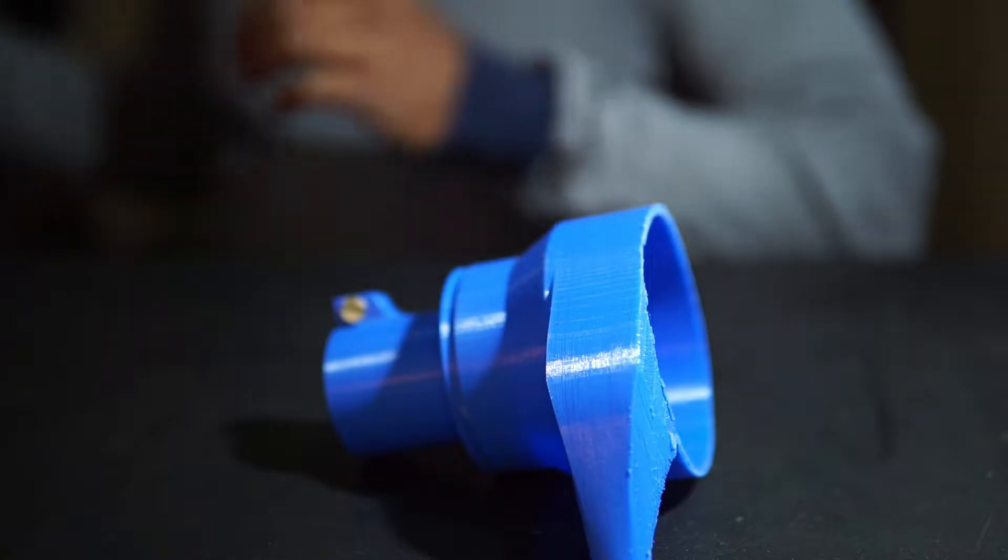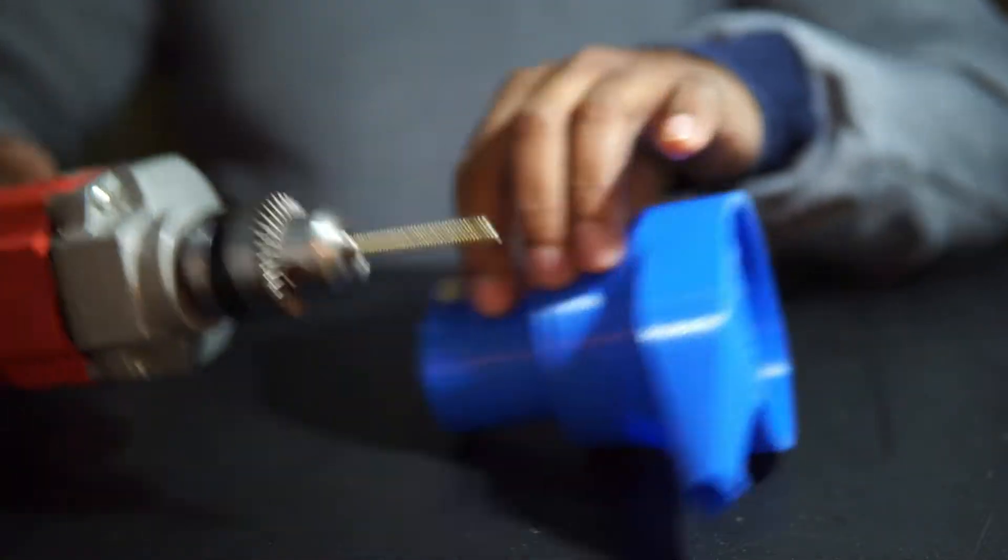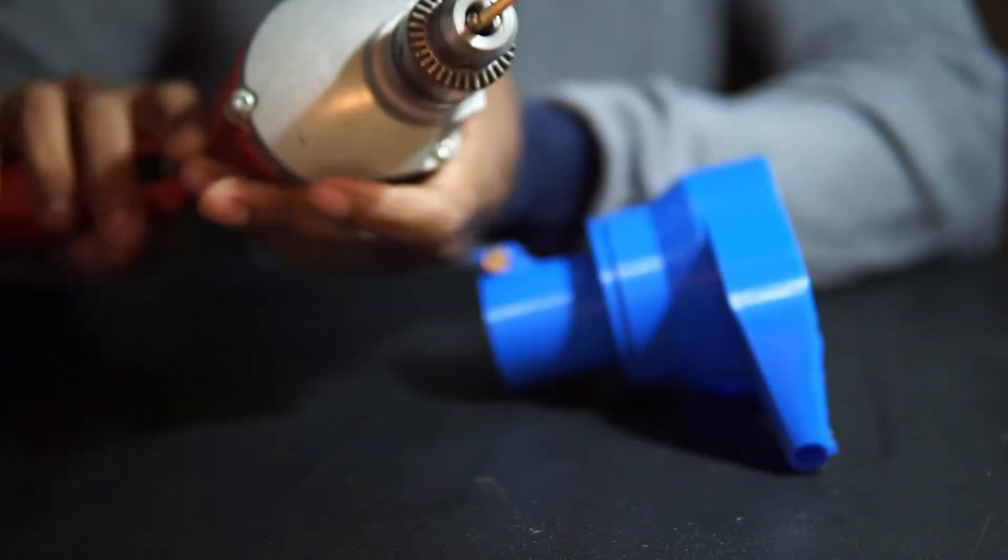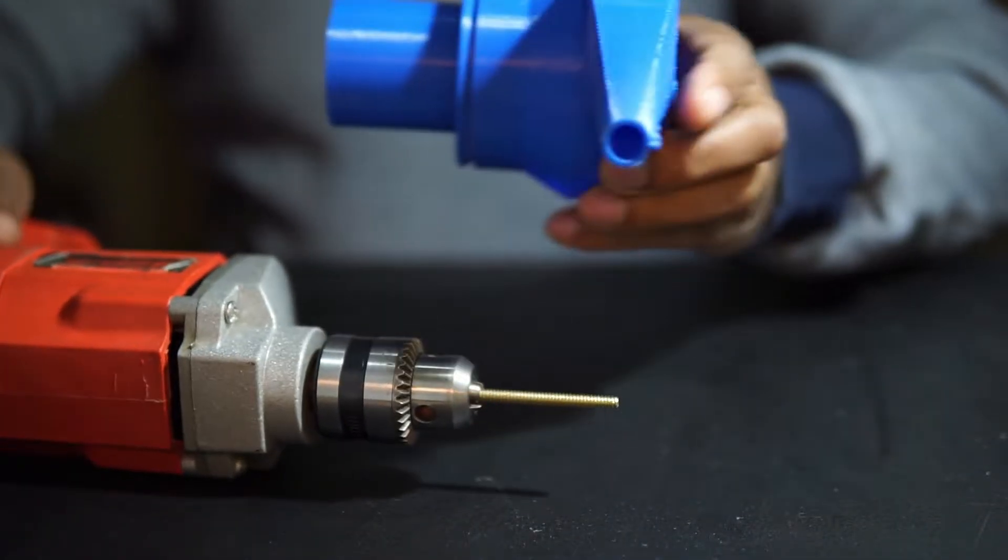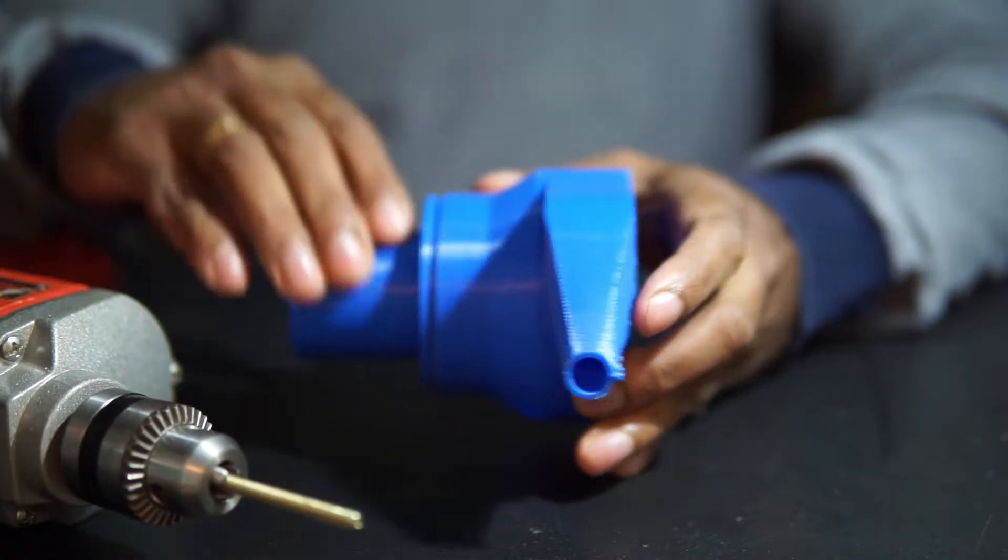Hello folks, welcome back to my channel. Today we will be doing a cost-effective blower attachment for conventional 10 millimeter electric drill. All the parts of this attachment are 3D printed using PLA, except a few nuts and bolts which I have used for fastening the attachments and mounting the blower blade.